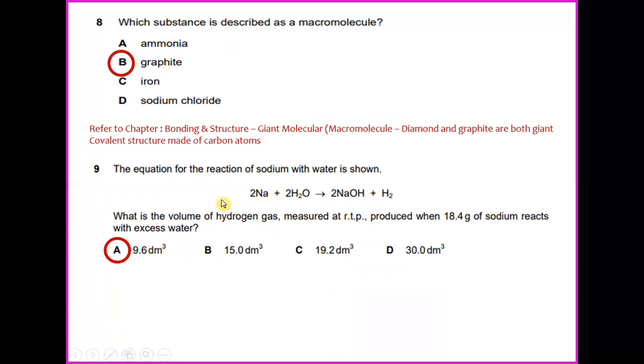The equation for the reaction of sodium with water is shown as 2Na plus 2H2O to form 2NaOH plus H2. What is the volume of hydrogen gas measured at RTP produced when 18.4 grams of sodium reacts with excess water? So the answer for this is A.